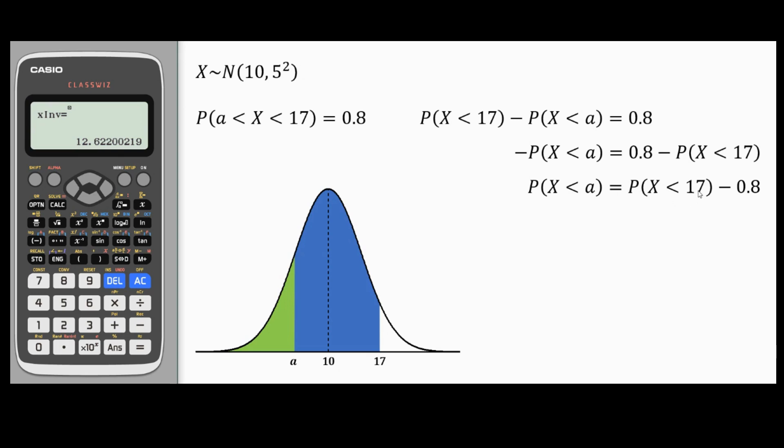I need to find this probability X less than 17. Go to menu distribution normal CND and repeat what we did before. I'll have a lower bound of minus infinity, so minus a huge negative number. Upper will be 17 and then sigma and mu stay the same. This gives me 0.9192. This is both regions together, the green and the blue one. I'm going to store this on my calculator. I'm going to press the STO button followed by one of those red letters. I'll select A. So I've stored my answer to A.